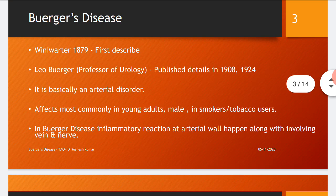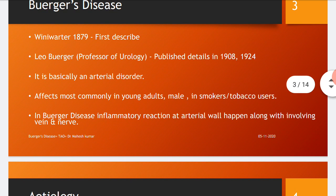Regarding history: Binnie Walter in 1879 first described Buerger's disease in the literature. Professor of urology Leo Buerger published details about this disease in 1908 and 1924. Buerger's disease is basically an arterial disorder, and it affects most commonly young adults, mostly males, and almost exclusively smokers or tobacco users.